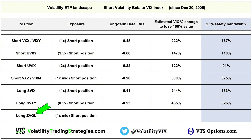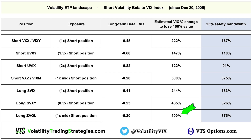Lastly, ZVOL is the midterm futures product. Low beta to the VIX index here — minus 0.2 beta would require a 500% VIX spike to terminate it. I'm very comfortable saying this isn't realistically possible.